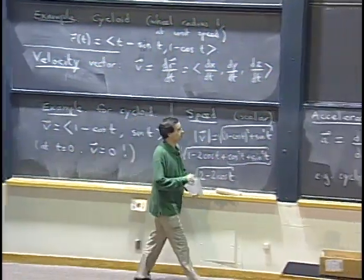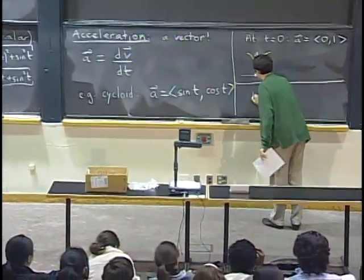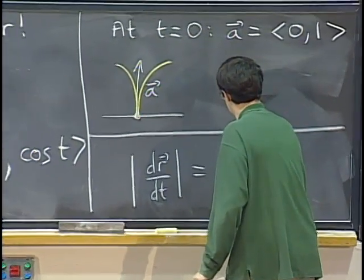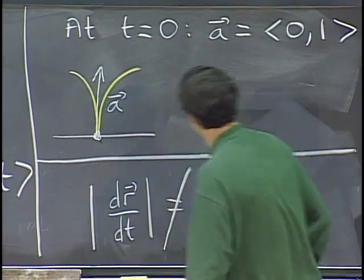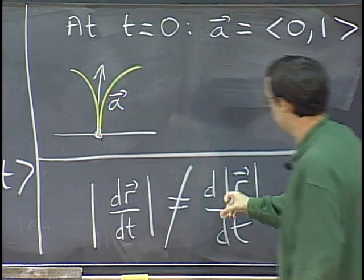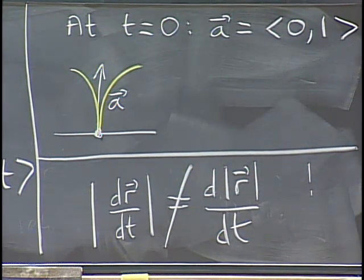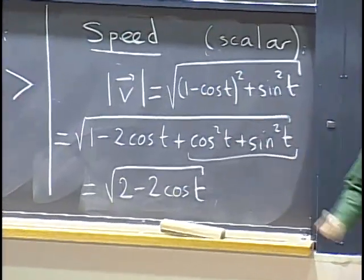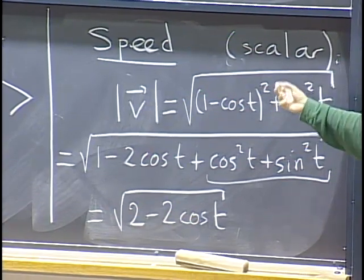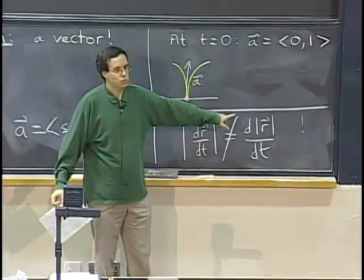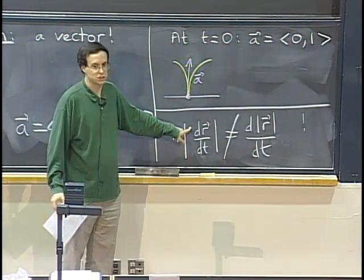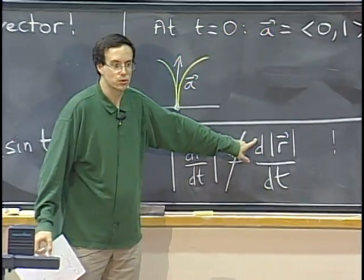We can differentiate vectors component by component, and we can differentiate vector expressions according to certain rules. One thing that is not true: the length of dr/dt — which is the speed — is not equal to d(|r|)/dt. This is completely false; they are really not the same. If you have to differentiate the length of a vector, you'd use the square root of the sum of squares of components plus the chain rule, but it will not be a nice expression. Fortunately, we almost never have to compute that.